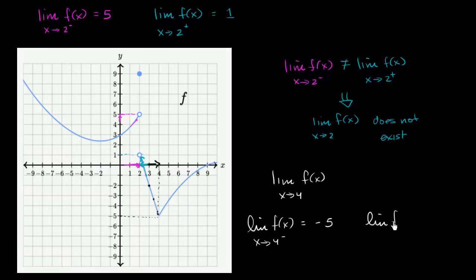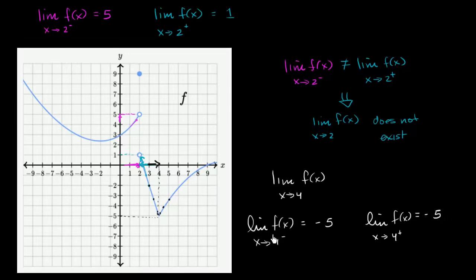And the limit of f of x as x approaches 4 from the right — from values larger than 4: f of 5 gets us here, f of 4.5 seems right around here, f of 4.1 seems right about here, f of 4.01 seems right around here. Even f of 4 is actually defined. We see we are approaching negative 5. Even if f of 4 were not defined, on either side we would be approaching negative 5. Since the limit from the left equals the limit from the right, we can say the limit of f of x as x approaches 4 is equal to negative 5.